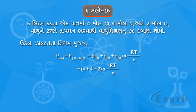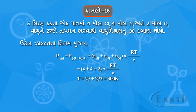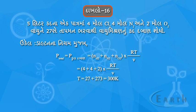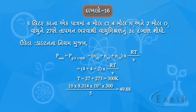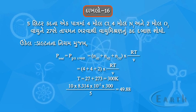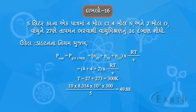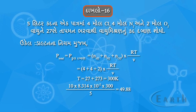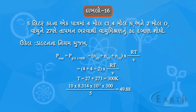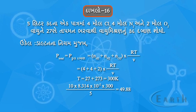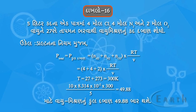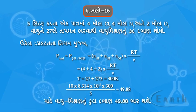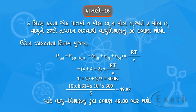T is equal to 27 + 273 = 300 K. So the result is 10 × 8.314 × 10⁻² × 300 / 5 = 49.88 bar. Therefore, the total pressure of the gas mixture will be 49.88 bar.